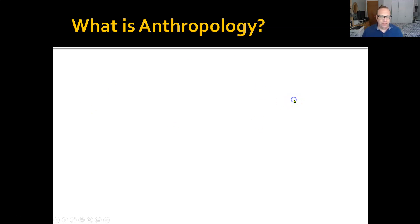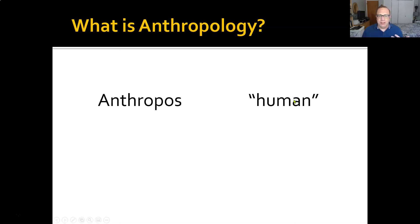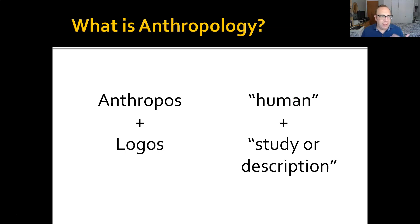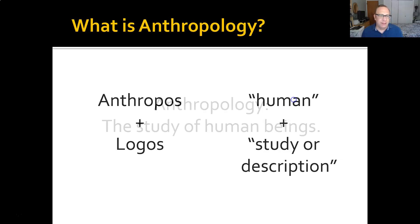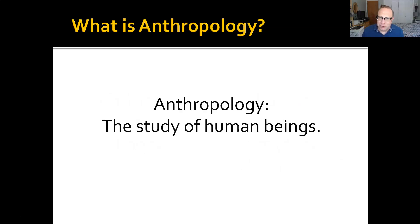Anthropology comes from two root words. The first is 'anthropos,' which means human, and the second is 'logos,' meaning the study or description of. And so anthropology, very logically, is the study or description of human beings.